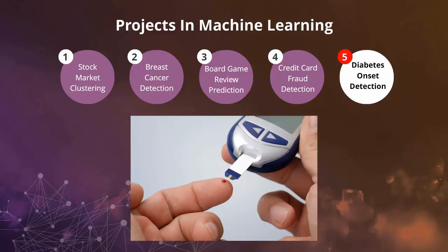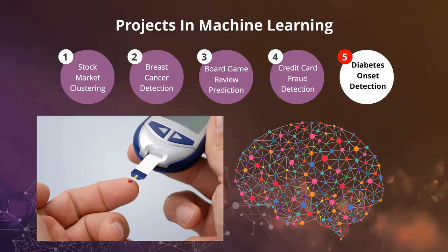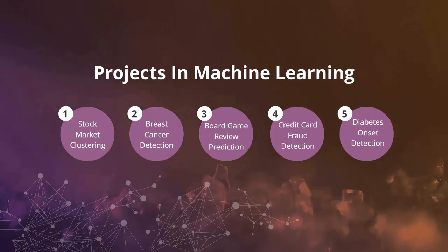The fifth and final project is going to be a diabetes onset detection with a deep learning grid search. In that project, we will fine tune a deep neural network by performing a grid search. The network will be used to detect the onset of diabetes based off patient data.